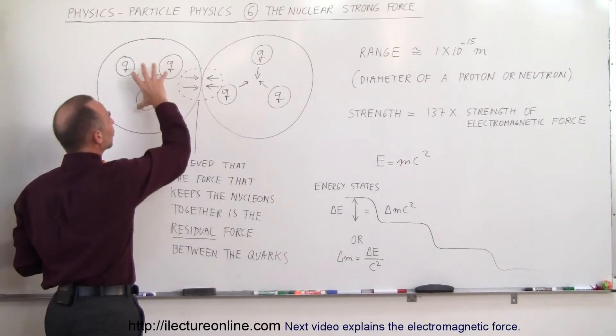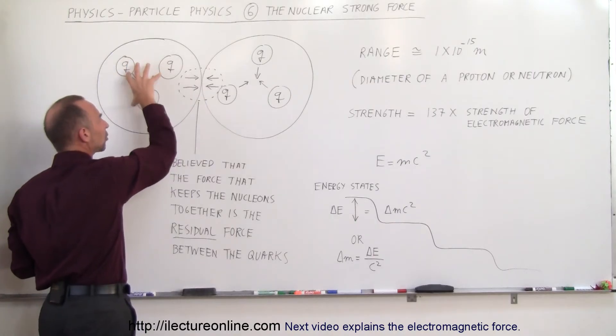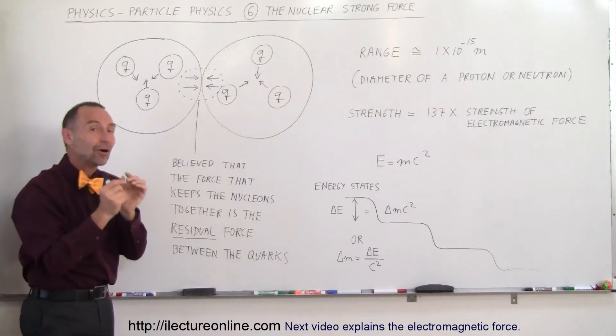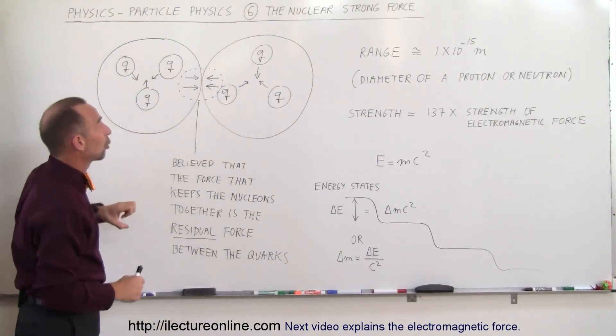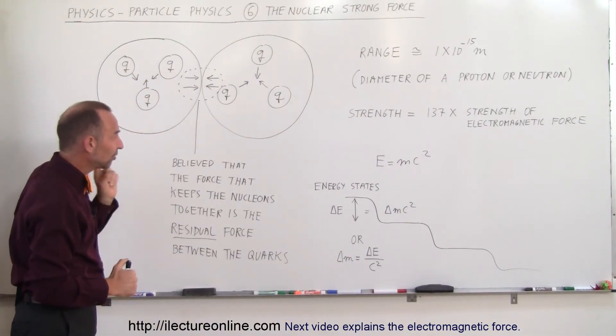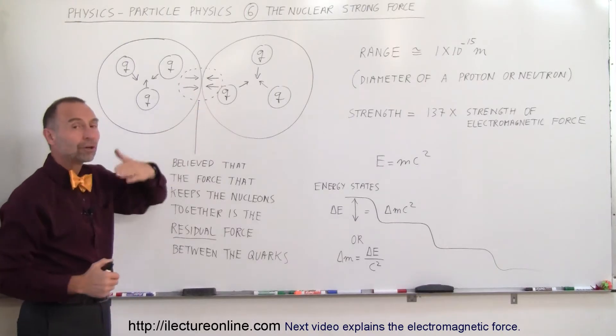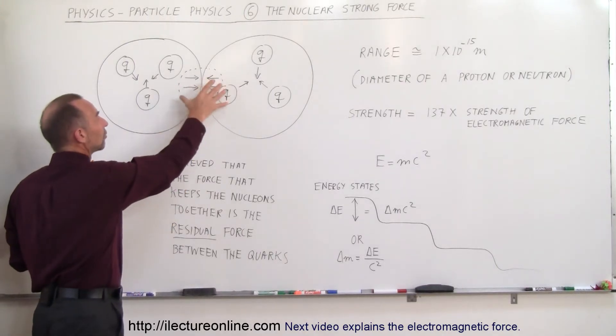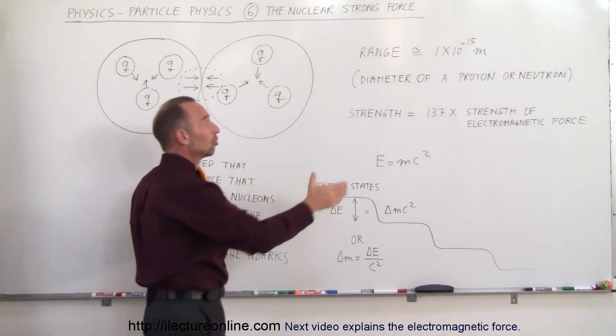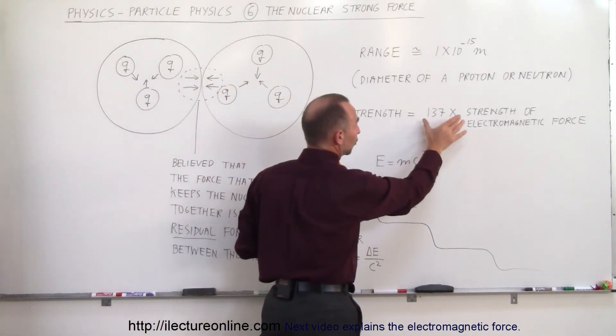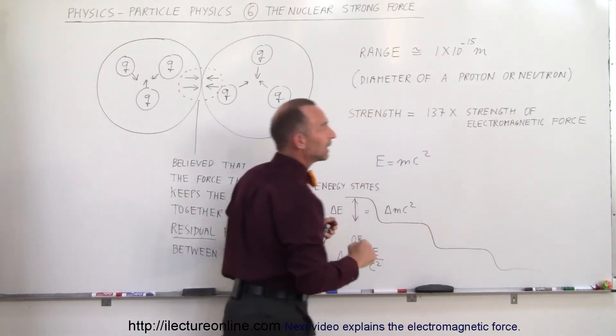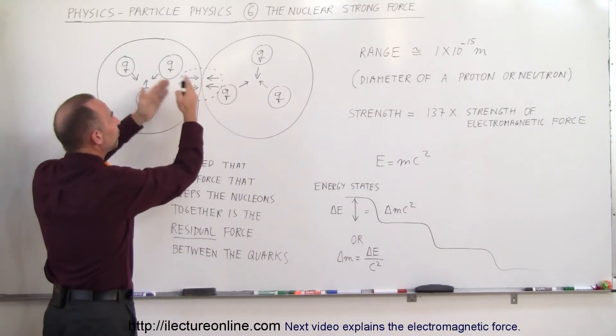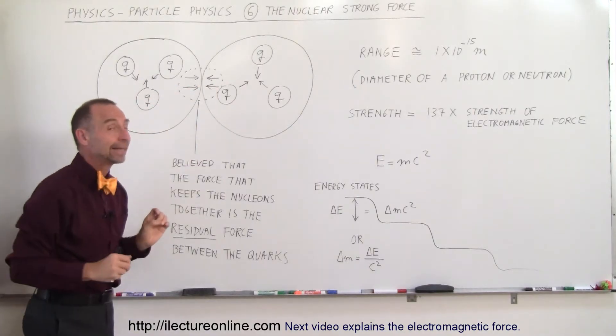And so you can see that since the primary function is there to keep the quarks together, the amount of force keeping the nucleons together is far less than the force keeping the quarks together. But still, it's sufficient to overcome the repulsive forces of the nucleons if they're both positively charged. And that is because the strength of nuclear strong force is so much larger than the strength of the electromagnetic force that even the spillover force between the nucleons is sufficient to keep the nuclei together.